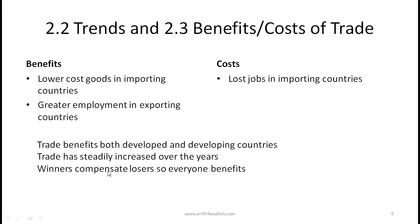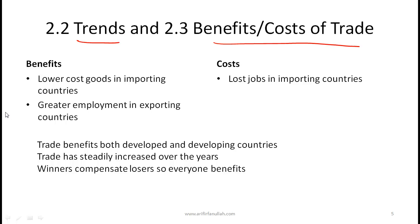From a learning objectives perspective for sections 2.2 and 2.3, you really need to focus on the benefits and costs of trade. The benefits and costs are fairly straightforward. When you have lots of free trade, there is benefit in terms of the importing country getting lower-cost goods. For example, people in the US benefit by buying Chinese products at a lower price, since China can make a given product of a given quality at a lower cost. There is also greater employment in the exporting countries.